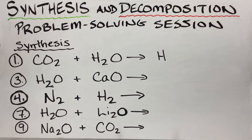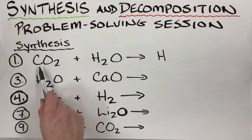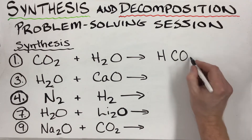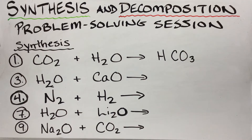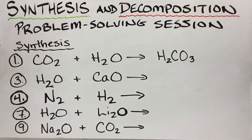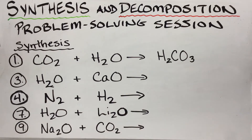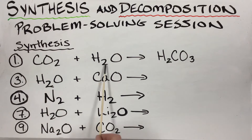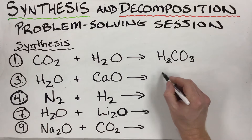So we combine CO₂ and H₂O. Carbon is a non-metal with oxygen, so CO₂ is a non-metal oxide. Non-metal oxides in water make acids, and acids begin with H. Taking everything outside the hydrogens — we have C and two O's plus a third O — that gives us carbonate with three oxygens total.